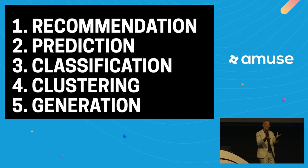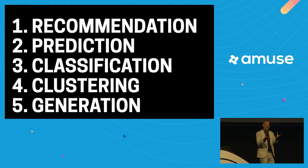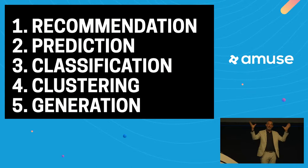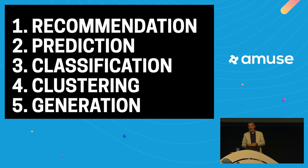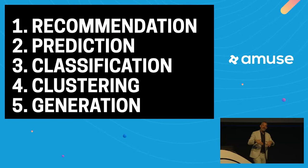So those are the five things you can incorporate into your products — recommendation, prediction, classification, clustering, and generation. They don't have to be big giant tent-pole features; they can be small helpful enhancements, even to a plain basic web form.